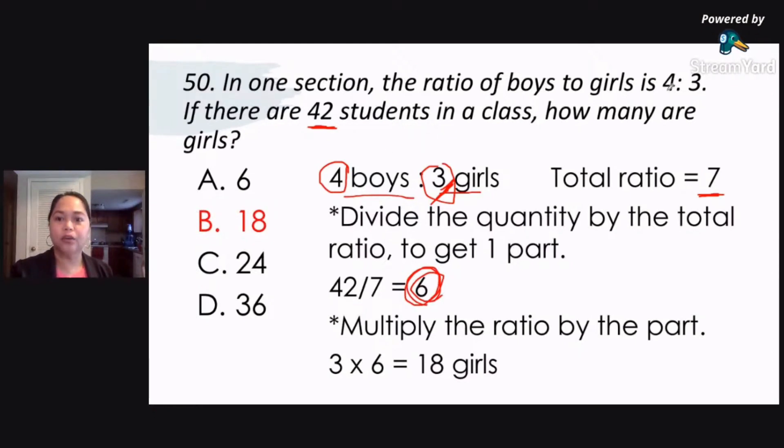So again, just add your ratio to get the total ratio. So 4 plus 3 is 7. Then divide the total quantity by the total ratio. So 42 divided by 7, that gives us 6. Okay, then multiply this ratio here by each part. So 3 times 6, that's 18.